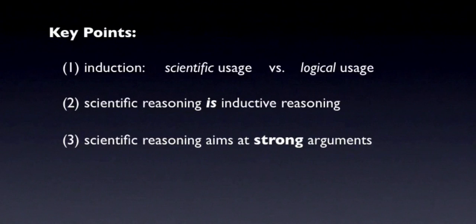The disciplines that trade in valid arguments and valid inferences are fields like mathematics, computer science, and formal deductive logic. The natural and social sciences, on the other hand, deal with fallible risky inferences, and they aim for strong arguments.